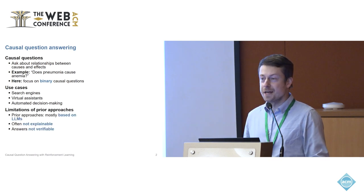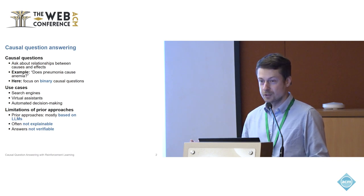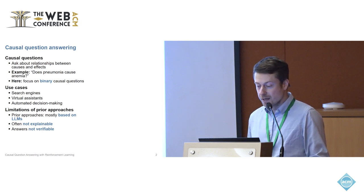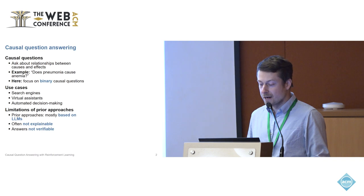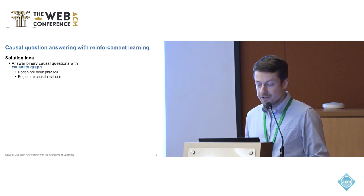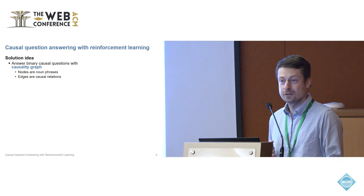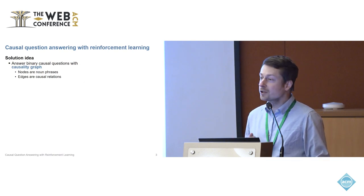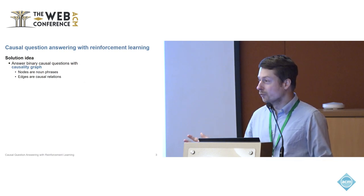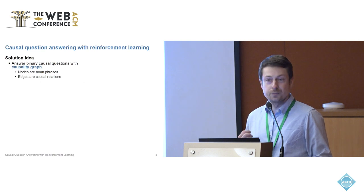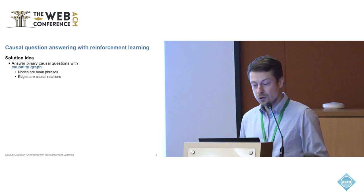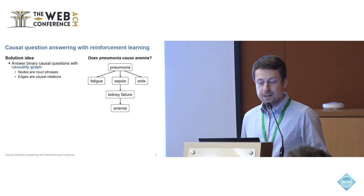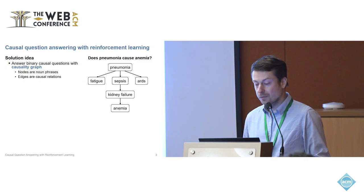Previous approaches mainly tackle this problem with large language models and try to answer such questions with LLMs. But the problem is that the answers are not explainable and not verifiable. So in this work, we take another approach and answer causal questions with a causality graph. In such a causality graph, nodes are noun phrases and edges represent causal relations. Here on the right-hand side, you can see an example of such a causality graph.